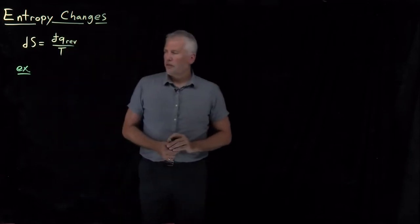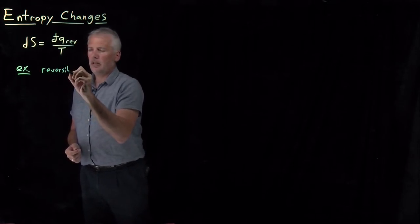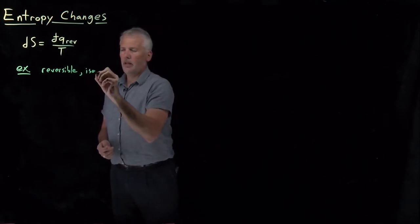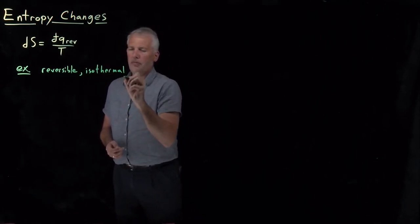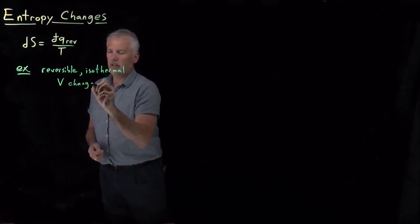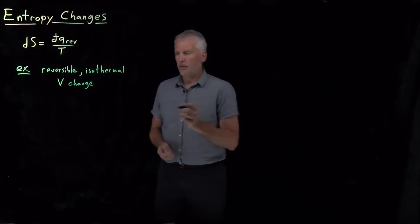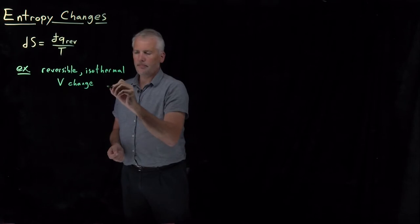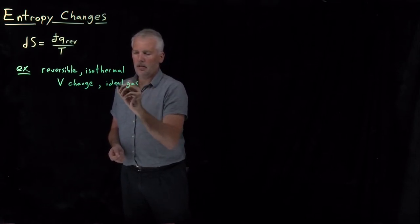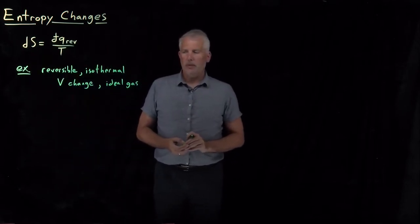As our first example, let's talk about something we've already discussed when we were talking more about heat. Let's say we want to change the volume of a gas — a volume change — and we'll do that reversibly and isothermally for an ideal gas. The question will be: what's the entropy associated with that process?